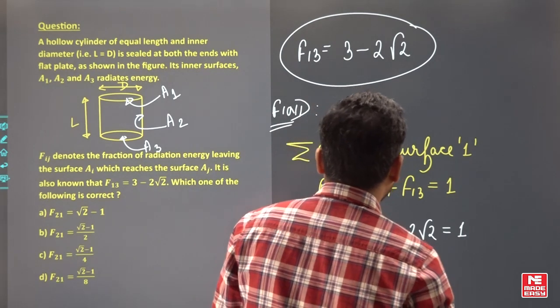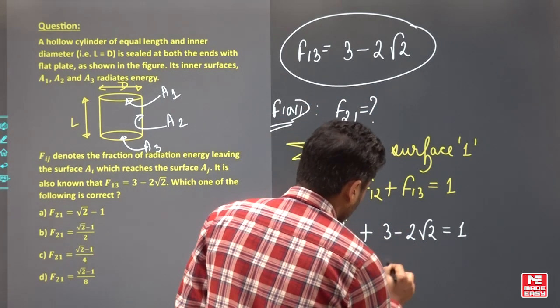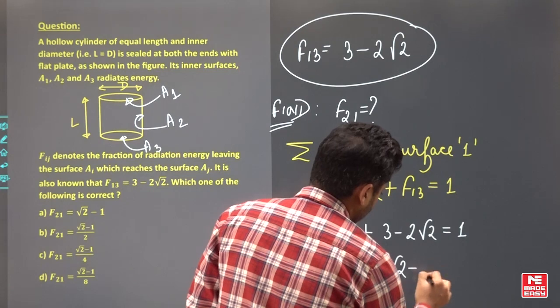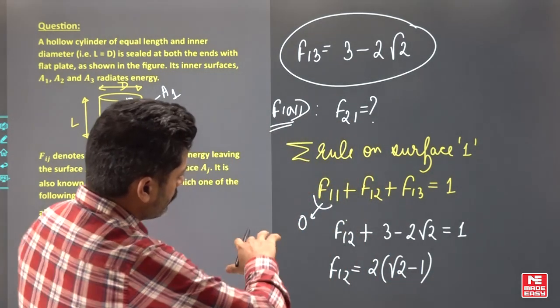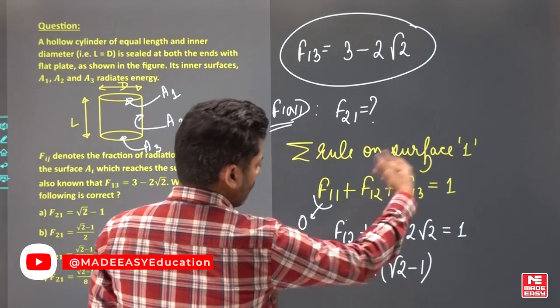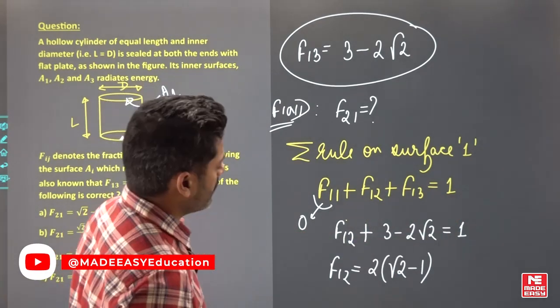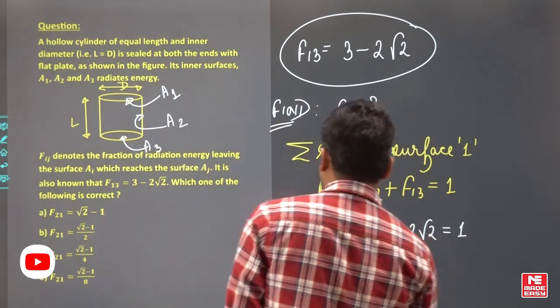So it will come 2 times root 2 minus 1. Three will go to this side and become minus 2, and that will become plus 2 root 2, so that is root 2 minus 1.